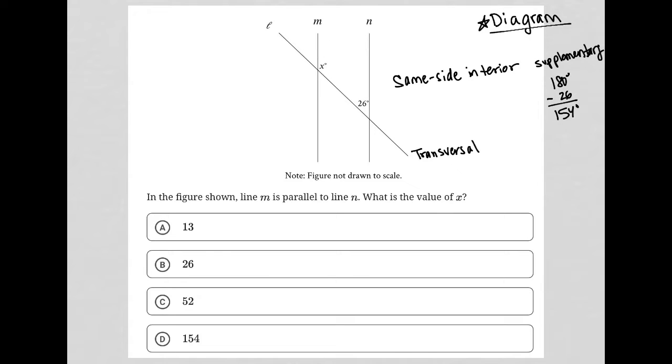In order for these two angles to be supplementary. So the question says: In the figure shown, line m is parallel to line n. What is the value of x? I've already explained how we got there, and choice D is the correct answer.